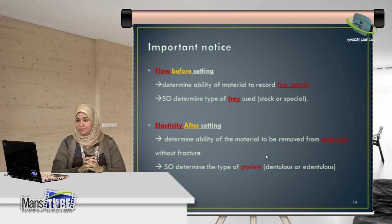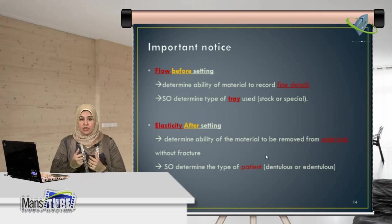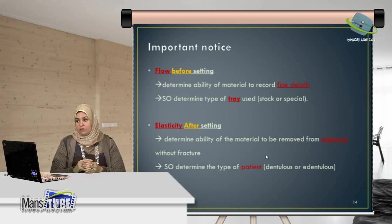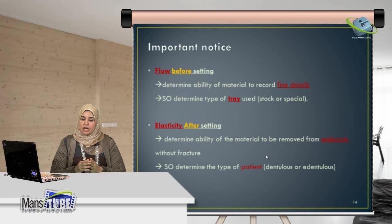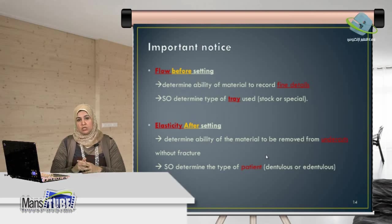An important notice: the flow of the impression material before setting determines the ability of the material to record fine details. If the material has high flow, it will get inside the fine details and record them accurately. This also determines the type of tray used. If the material has high flow and records fine details, a special tray is used for the secondary impression, not the stock tray.